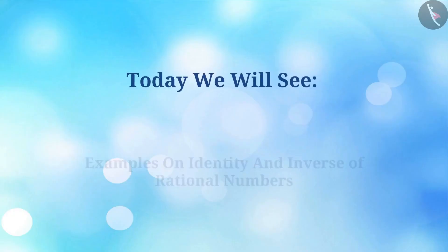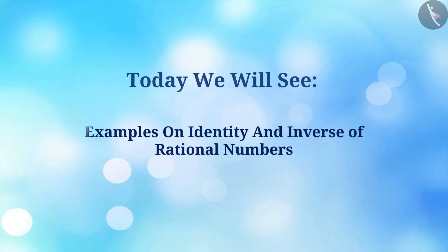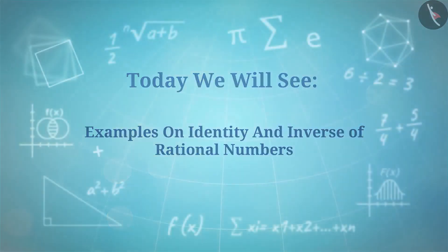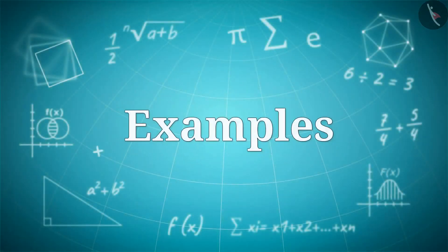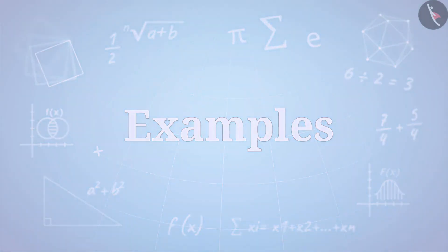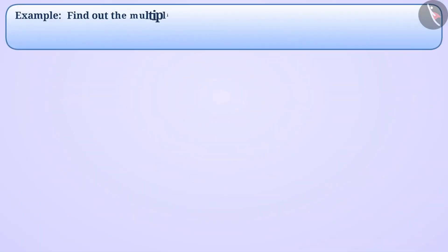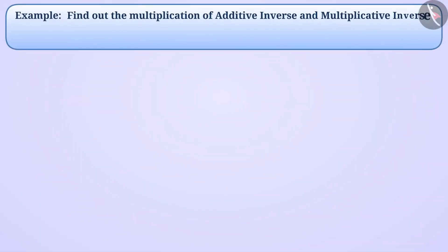Today we will see examples on identity and inverse of rational numbers. Find out the multiplication of the additive inverse and multiplicative inverse of -6/7.